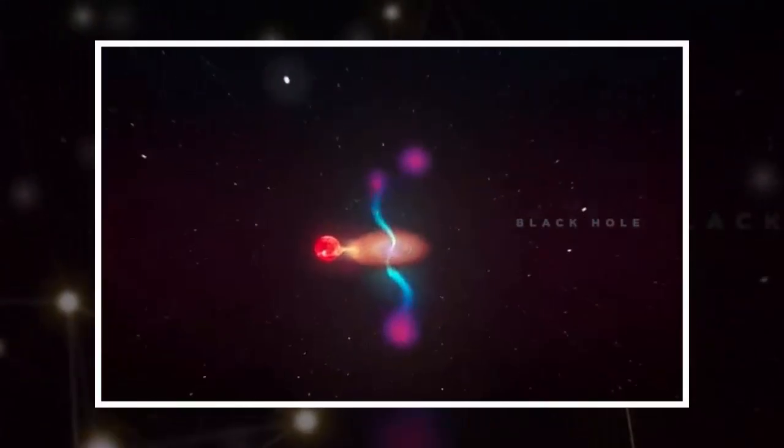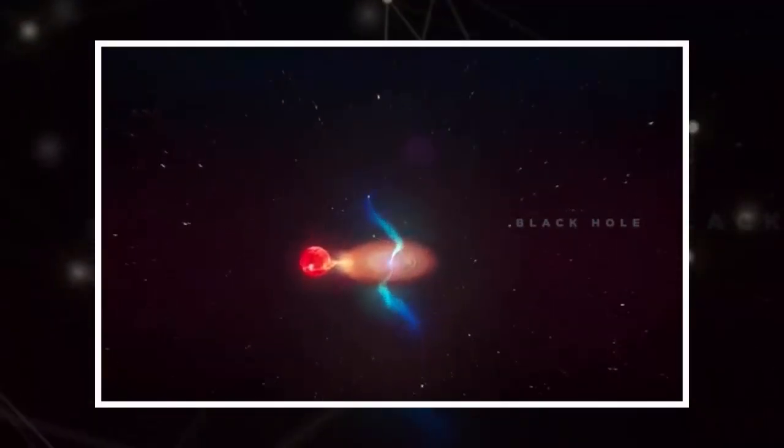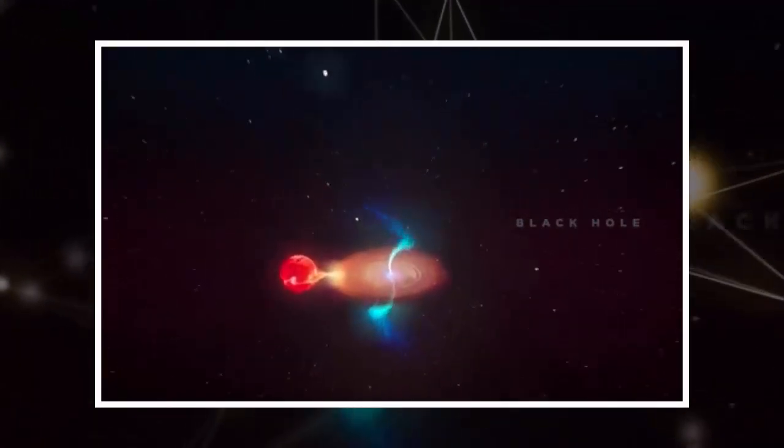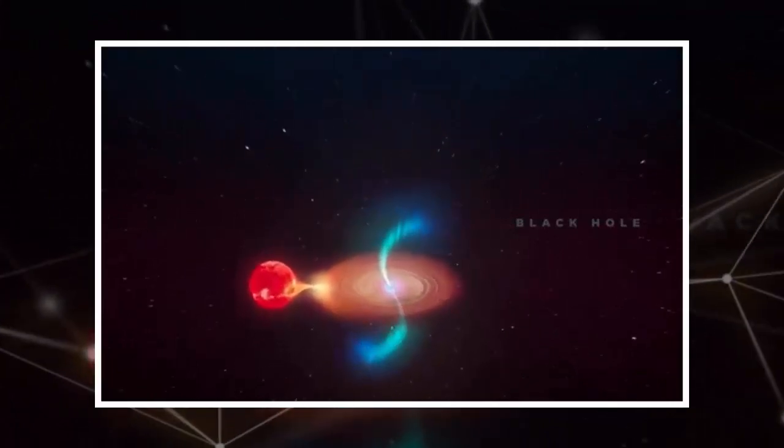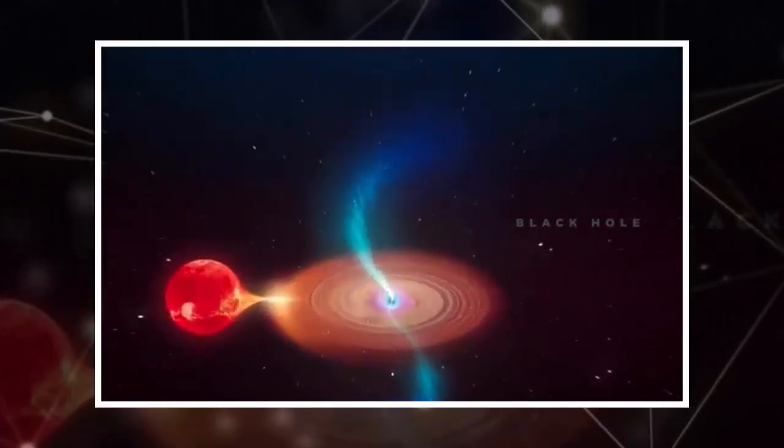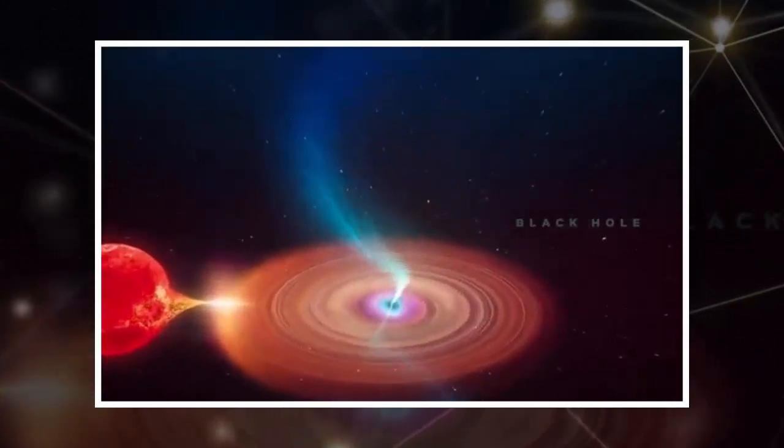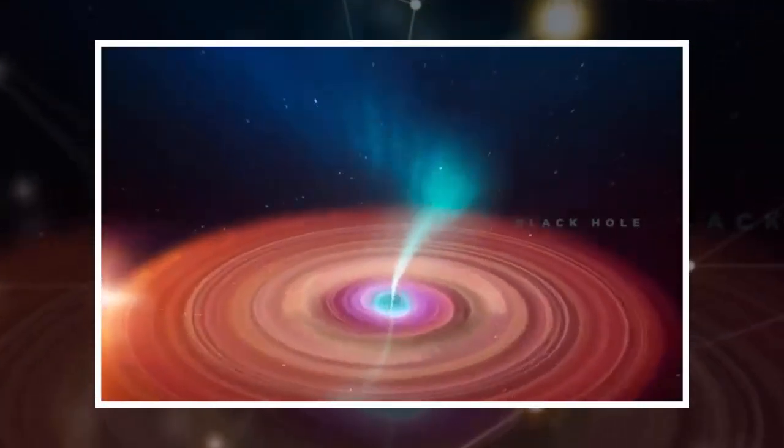Scientists first discovered Cygni in 1989, when it released a massive outburst of jets and radiation. They located the system in the Cygnus constellation, which is approximately 7,800 light-years away from Earth.